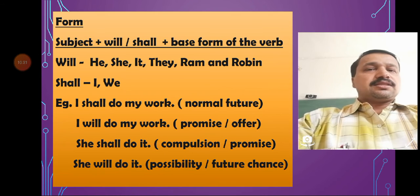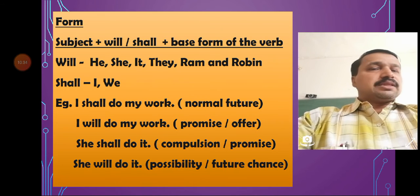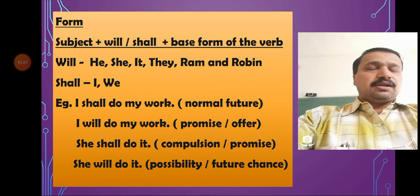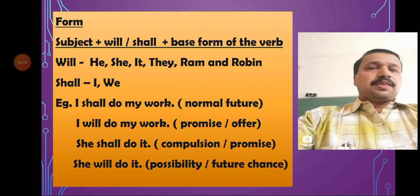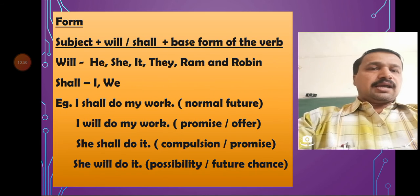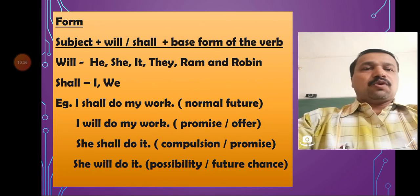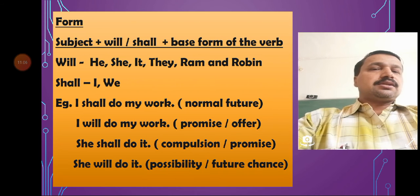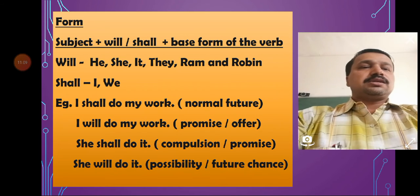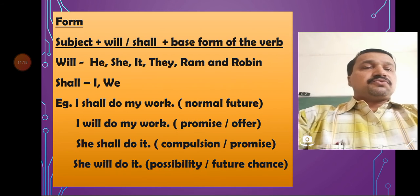Next is the form of simple future. The structure is: subject plus will or shall. Shall is used with I and we; with the rest of the subjects we use will. The base form of the verb is used. Examples: I shall do my work — normal case. I will do my work — considered a promise. She shall do it — something compulsory or a promise made by the speaker on her behalf. She will do it — a simple possibility of the future.